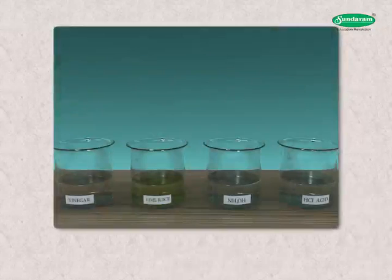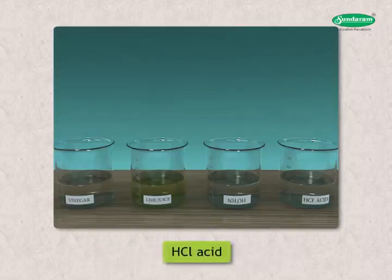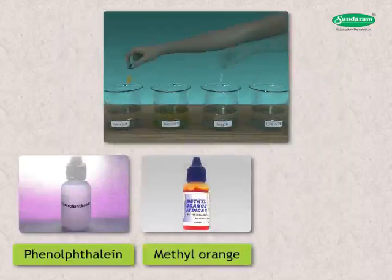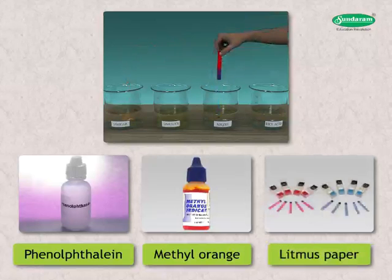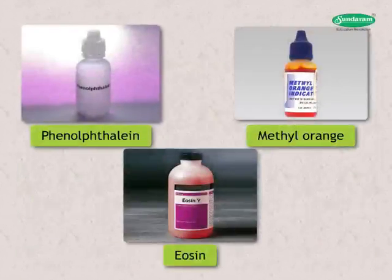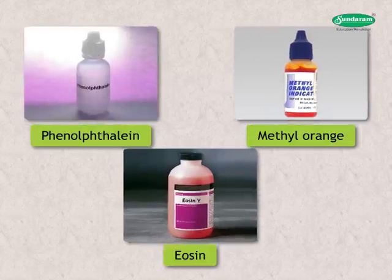Collect samples of vinegar, lime juice, ammonium hydroxide (NH4OH), and hydrochloric acid. Note your observations when you add one drop of phenolphthalein, methyl orange, and put a litmus paper into each. Tabulate the results. Some chemical substances such as phenolphthalein, methyl orange, and eosin are also indicators — they are called synthetic indicators.